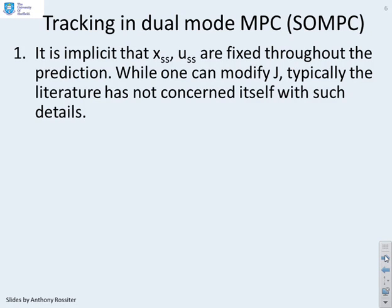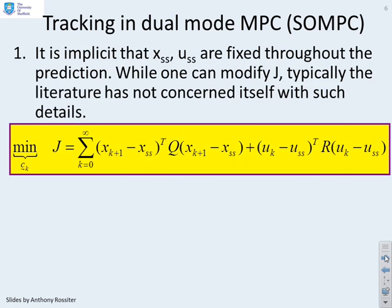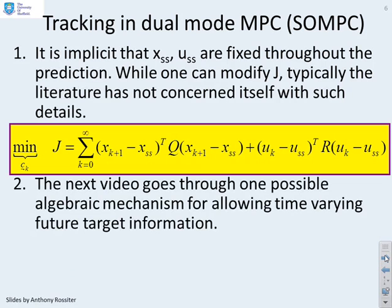So a summary. It's implicit in your typical approaches in the literature that XSS and USS are fixed. And so typically the literature has not concerned itself with time-varying targets. So what we're going to do in the next video is we're going to show one possible, I'm not saying it's the only possible, but one possible algebraic mechanism for allowing time-varying targets.